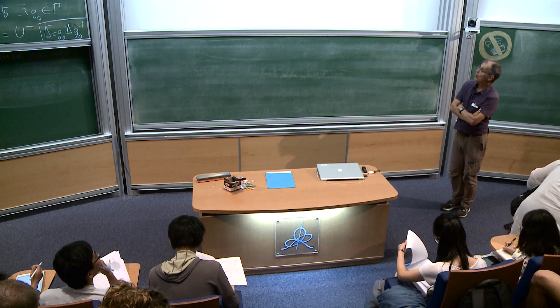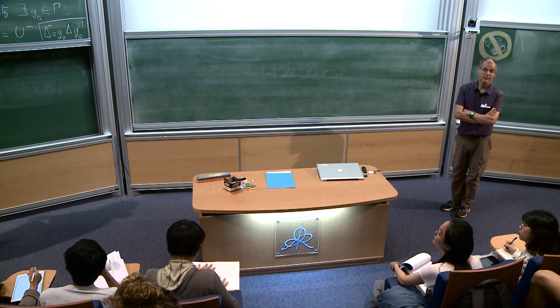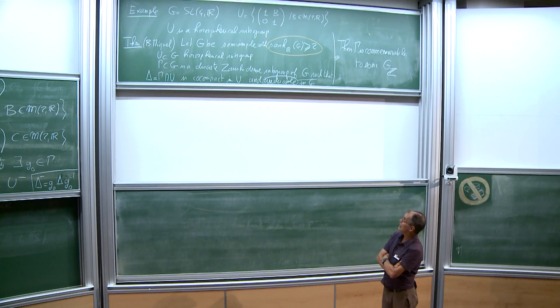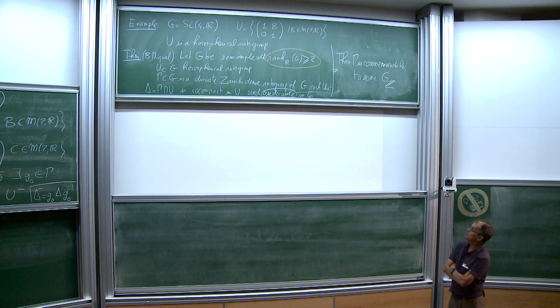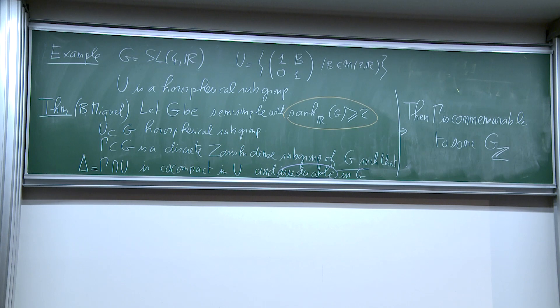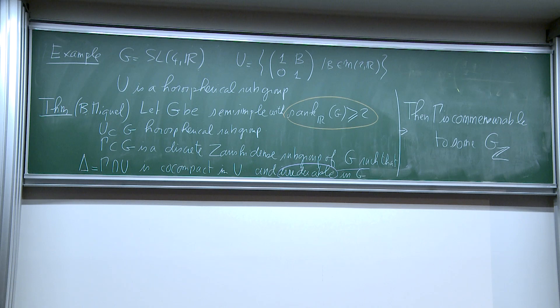We are back for this second talk on the arithmeticity theorem that I stated at the end of the first talk. This arithmeticity theorem tells you that if you have a Zariski-dense discrete subgroup of a semi-simple group in higher rank, which contains a co-compact lattice of some orospherical group, then it has to be arithmetic.